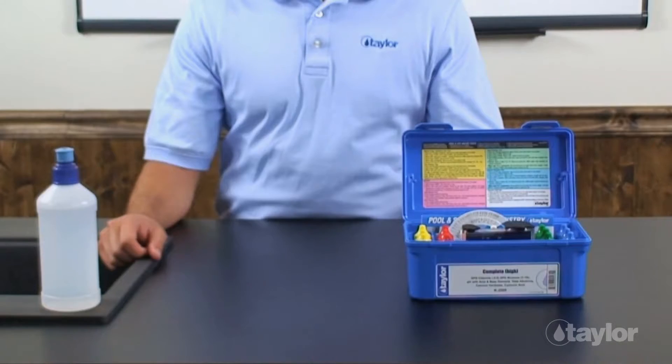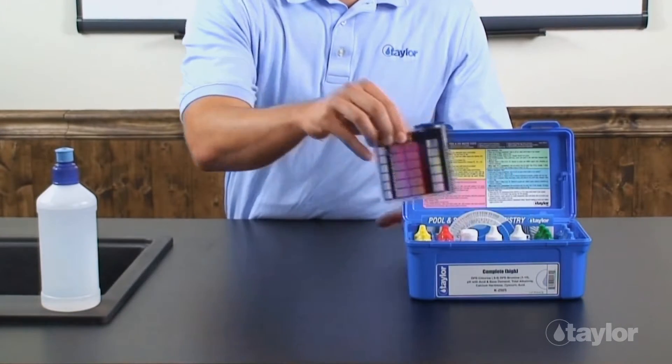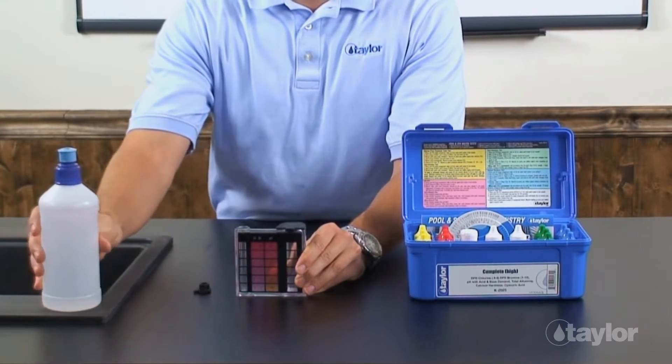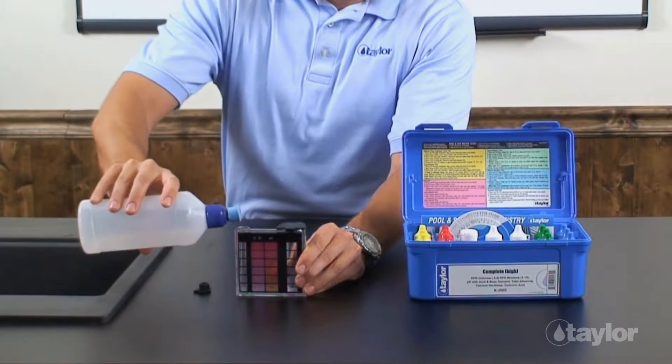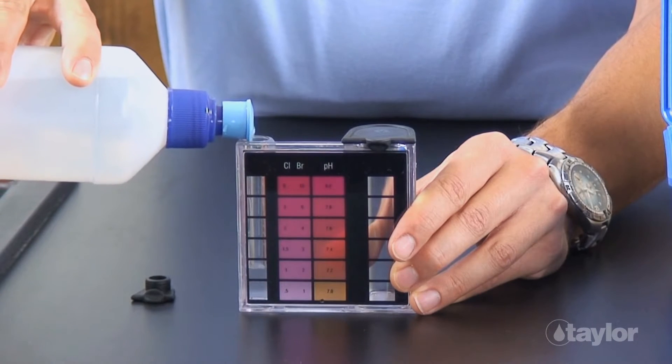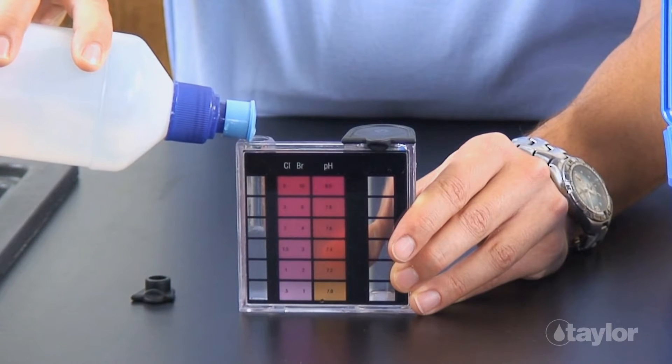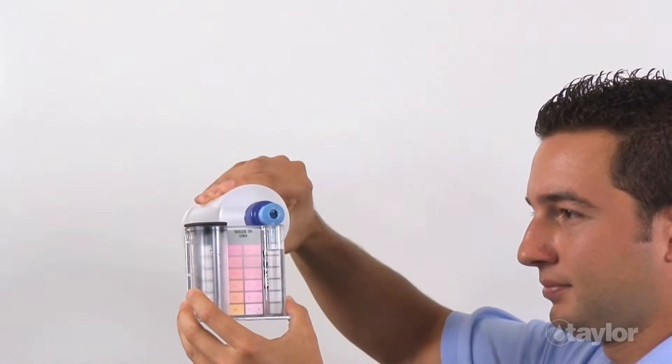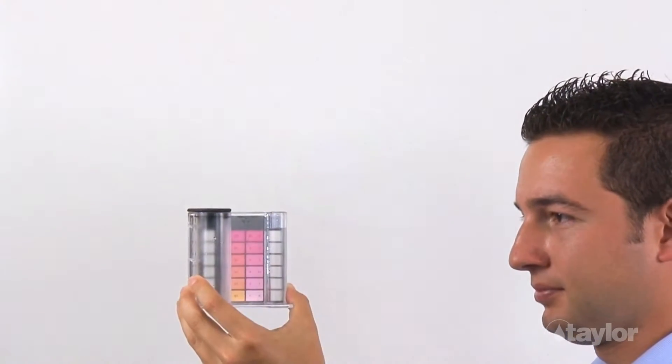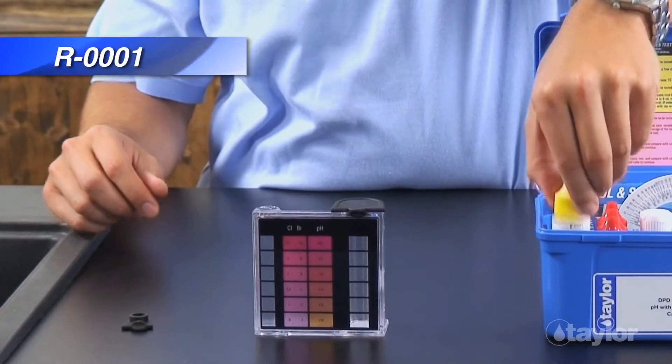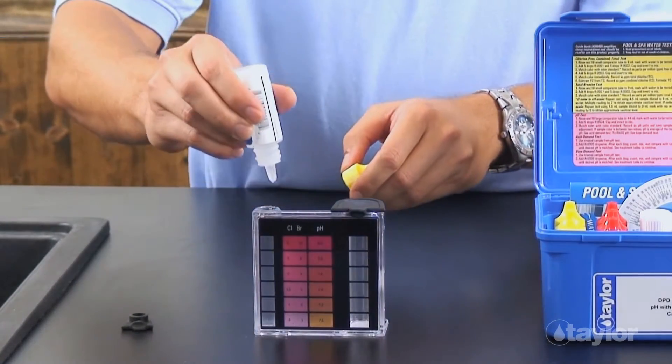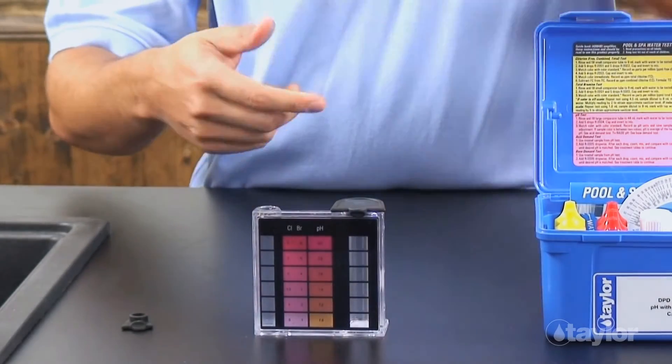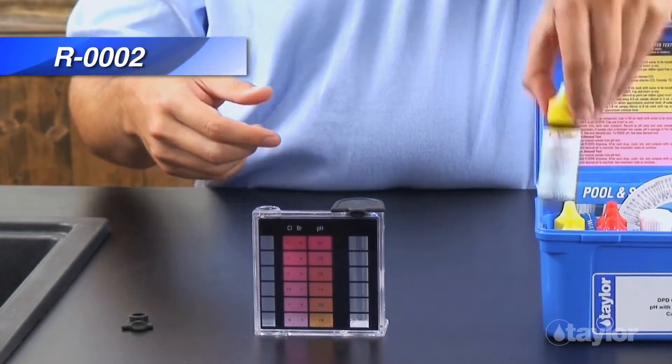To test total bromine, rinse and fill the small comparator tube to the 9 mL mark with the water to be tested. Add 5 drops of Reagent 1 and 5 drops of Reagent 2.